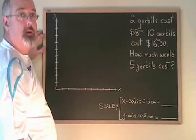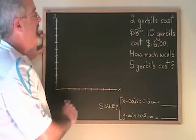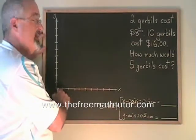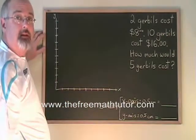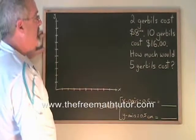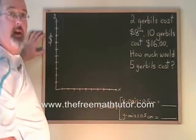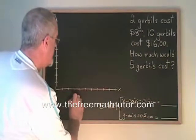The first thing I have to do, though, is scale my axes. We have numbers that don't necessarily fit if we scale 1, 2, 3, 4, 5 on an axis. I'm going to put the cost on this side, and I'm going to put the number of gerbils down here.